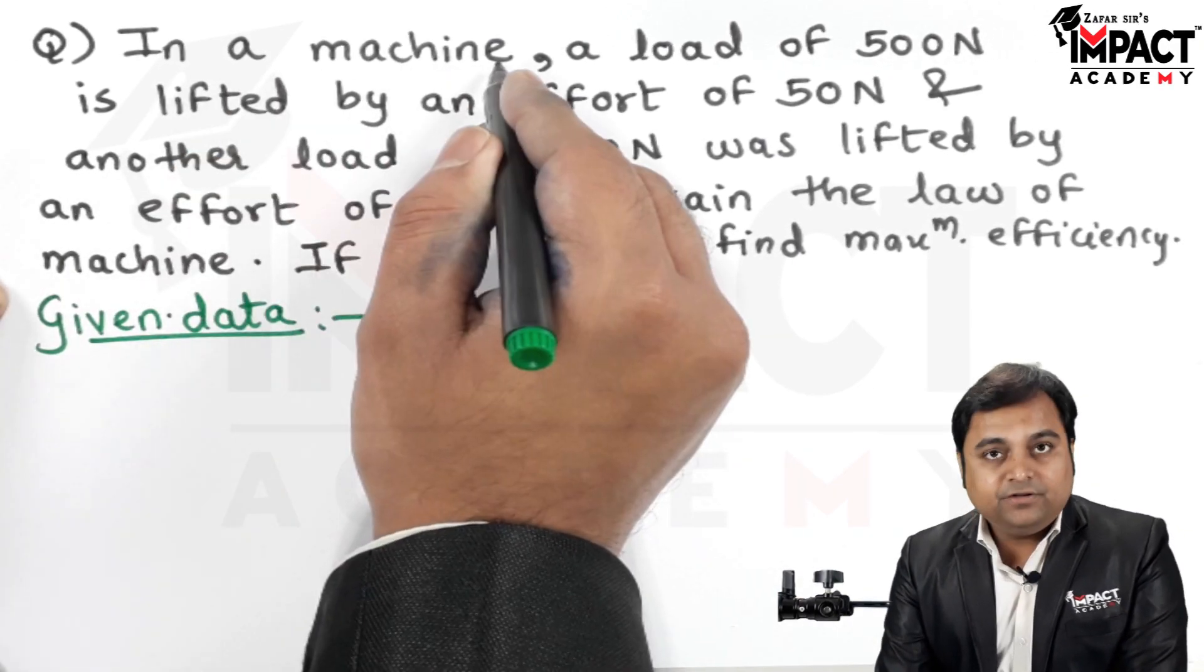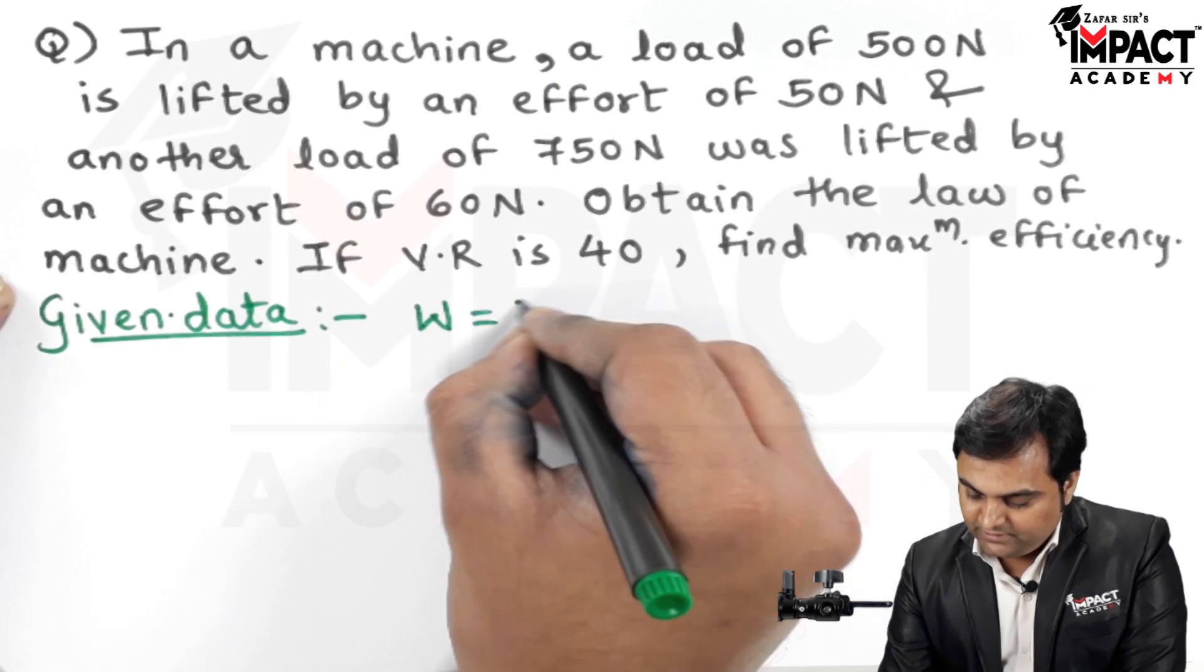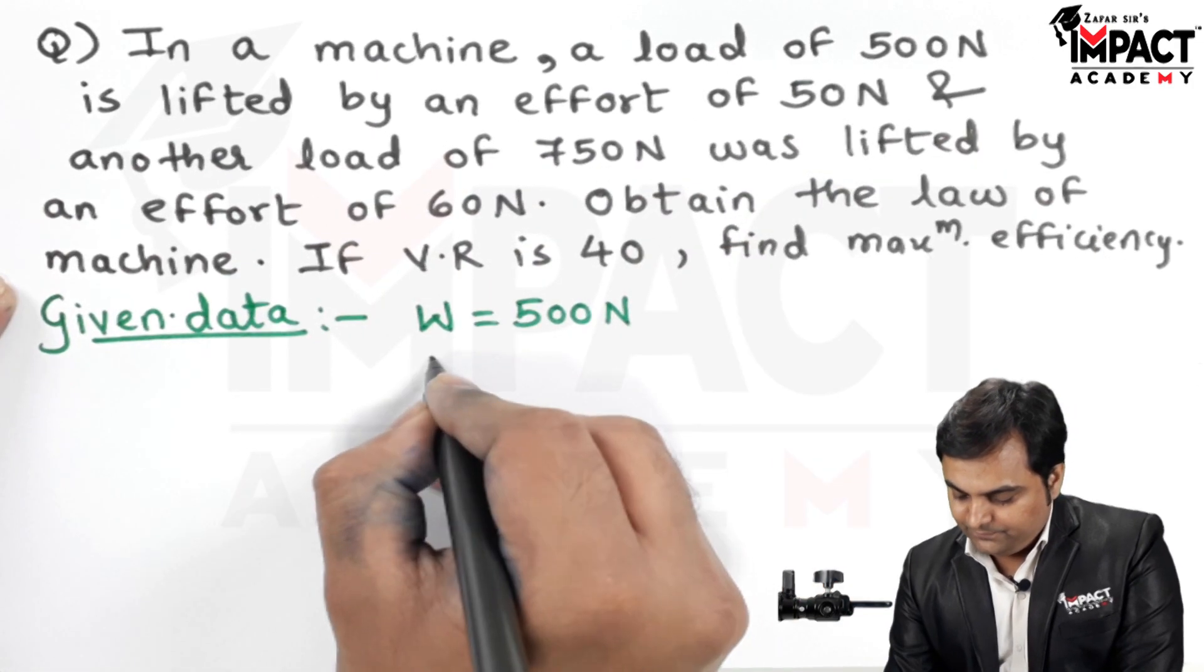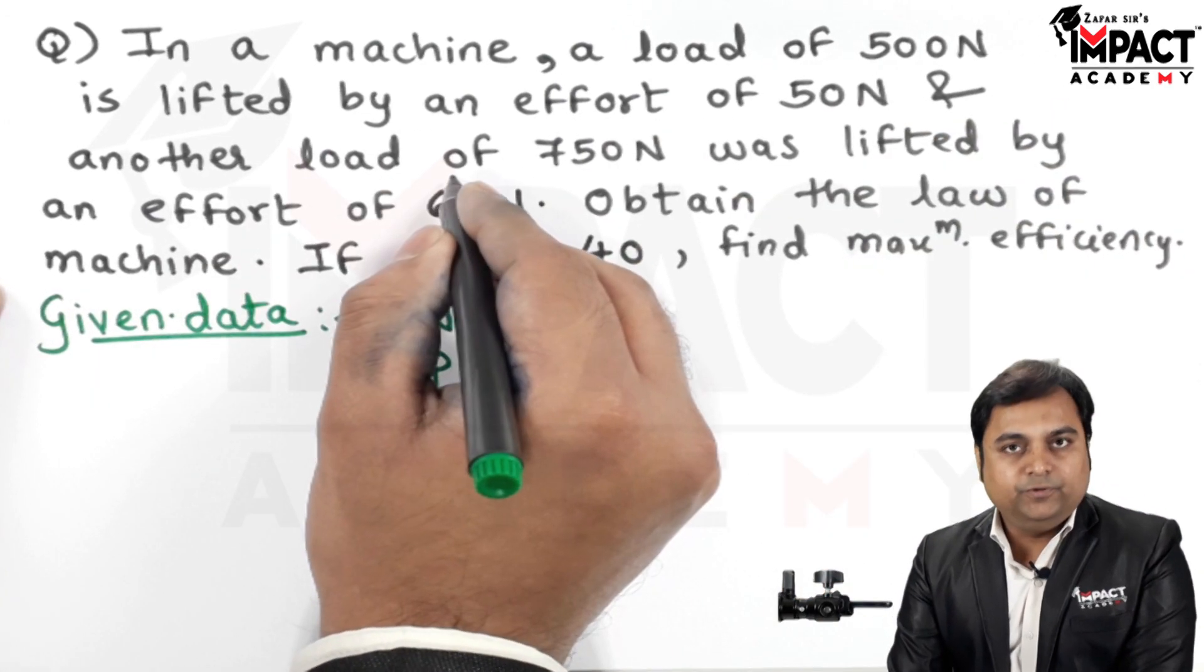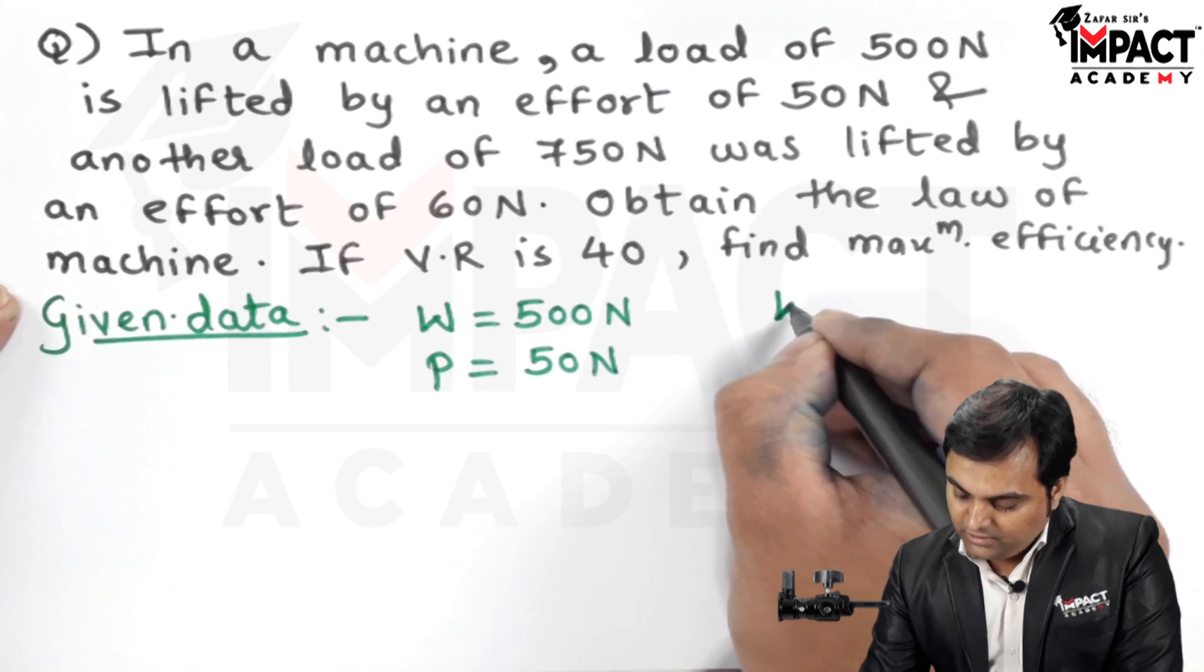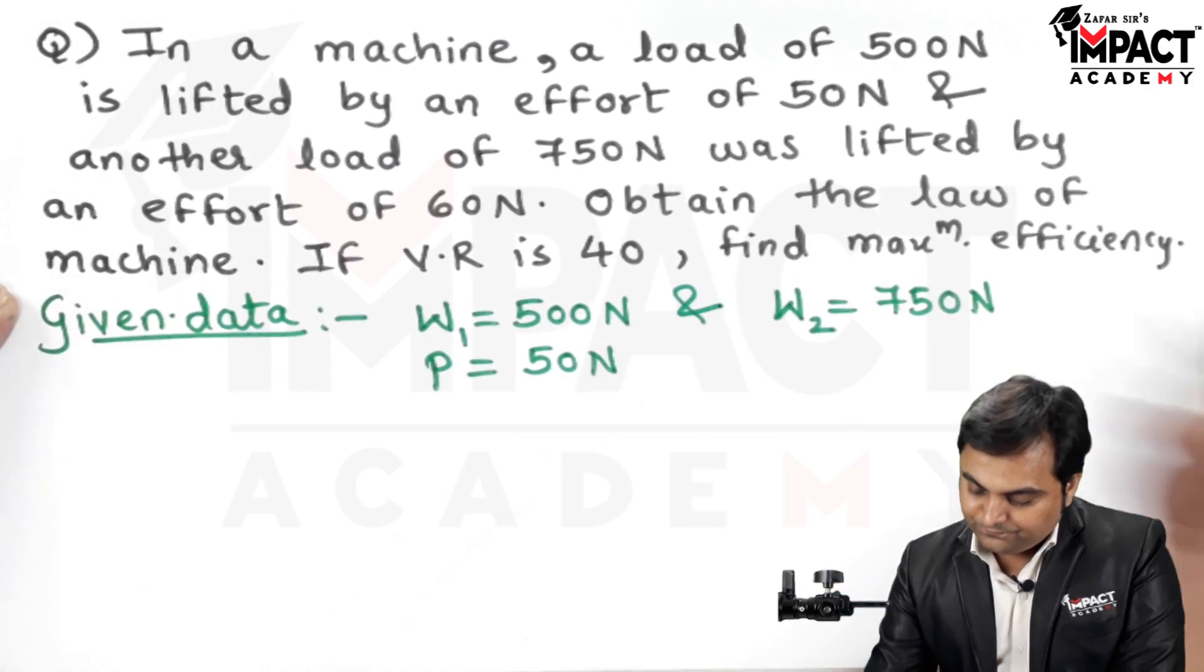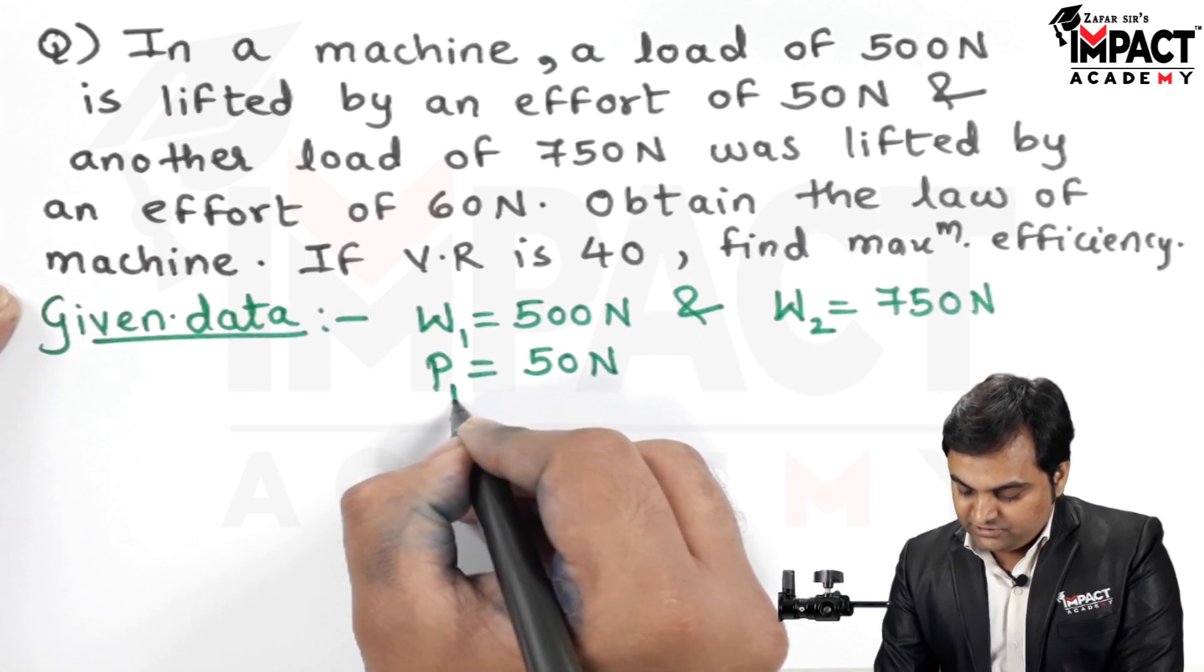In a machine, a load of 500 Newton, denoted by W1, is lifted by an effort of 50 Newton, denoted by P1. Another load of 750 Newton, W2, was lifted by an effort of 60 Newton, P2.